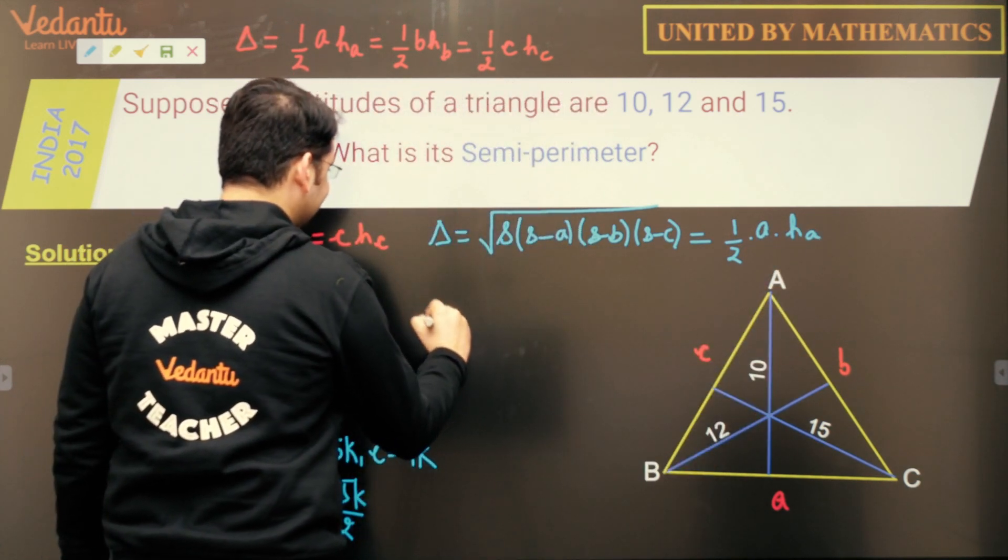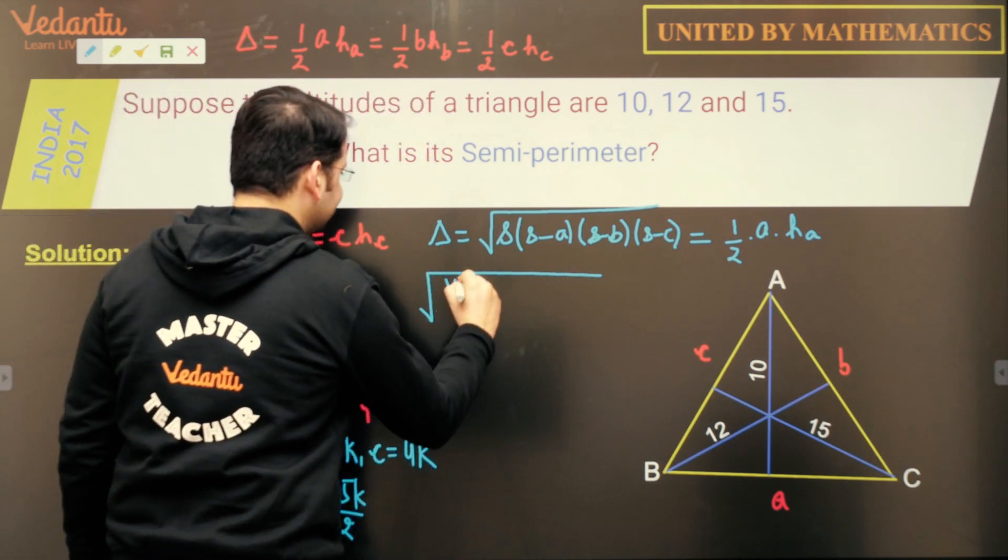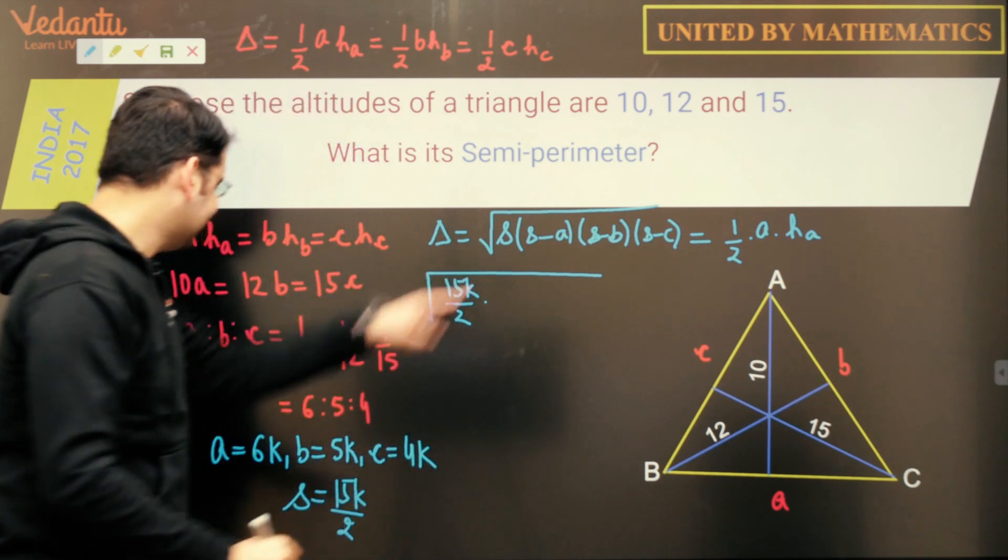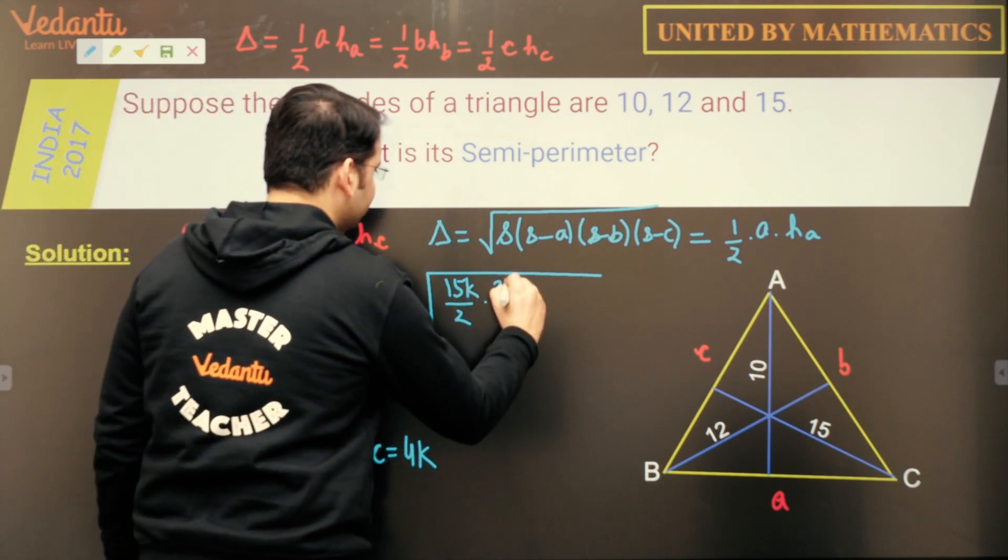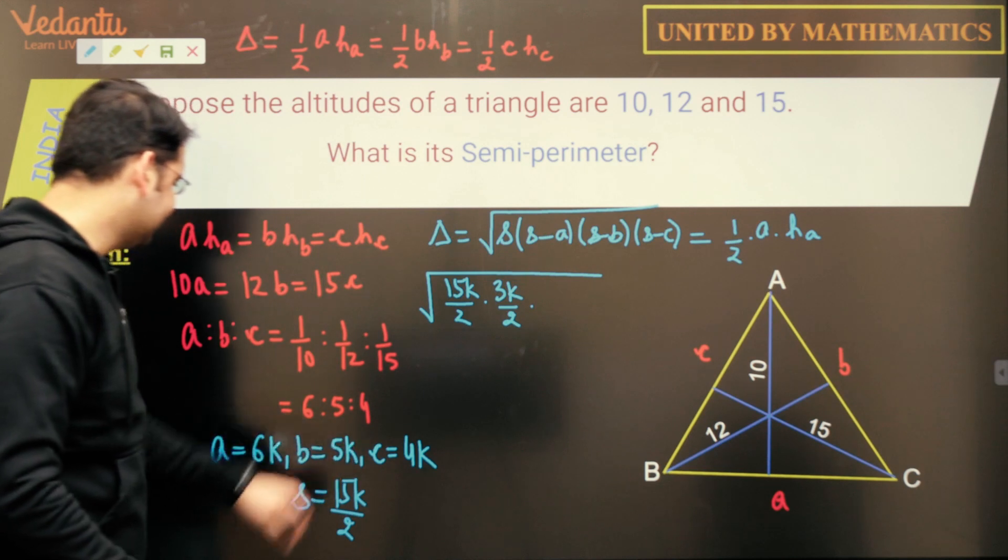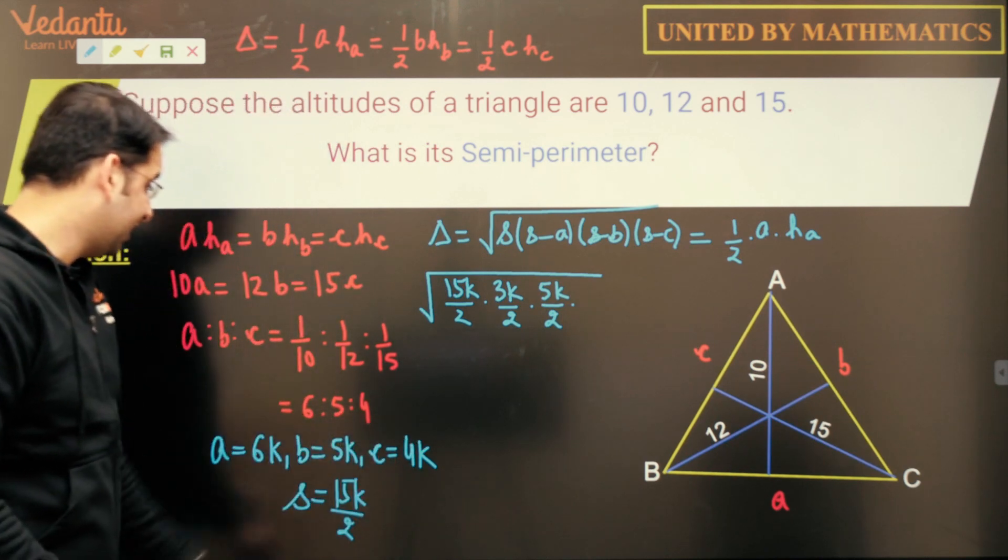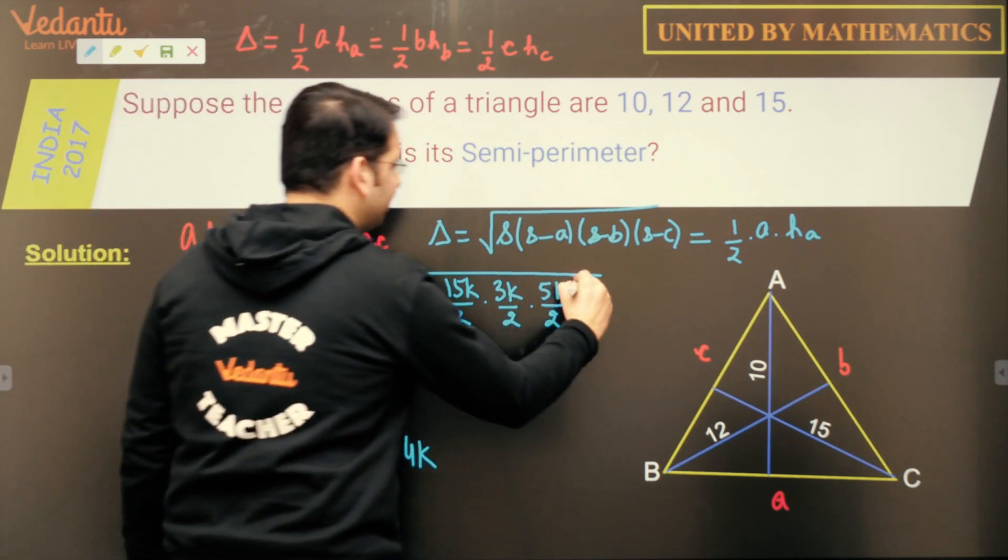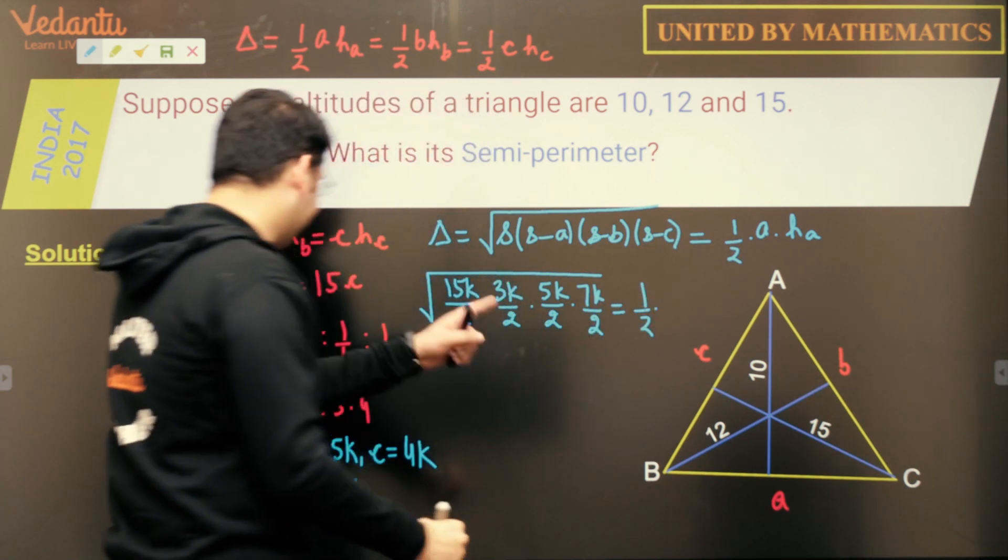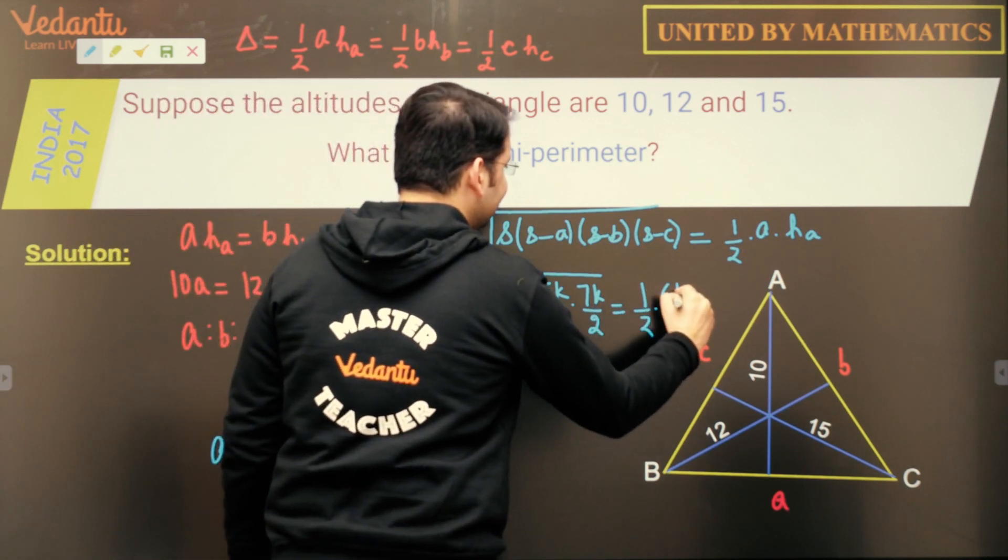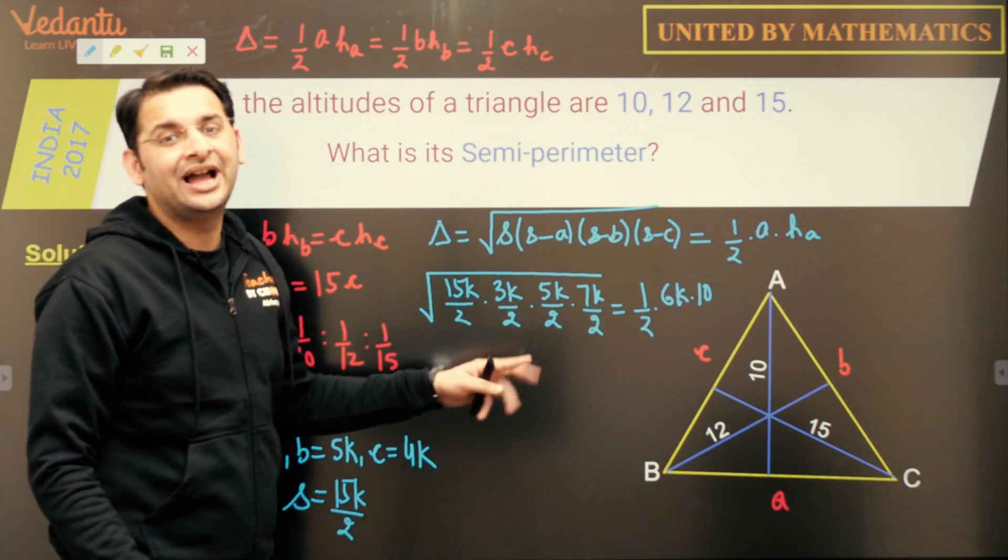So let us equate these two. So we have S which is 15K upon 2 in this case into S minus A. So S minus A, 15K by 2 minus 6K would be 3K upon 2. Into S minus B, it will be 5K upon 2. Into 15K upon 2 minus 4K, so it will be 7K upon 2. And this equals half into A. A is 6K in this case into altitude from A which is 10. And if I equate these two, I will get the value of K and we are done.